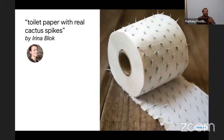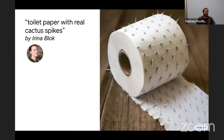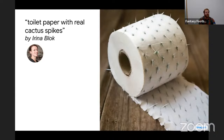I encourage everyone to play around with these systems — there are really amazing examples of what you can get. But when you try it yourself, you see ways in which generative image models are really good and ways in which they're really bad. Understanding where they work and don't work is critical to thinking about how to advance them and remove biases. Here's an example — toilet paper with real cactus spikes — and these generative image systems are able to produce pretty realistic content.